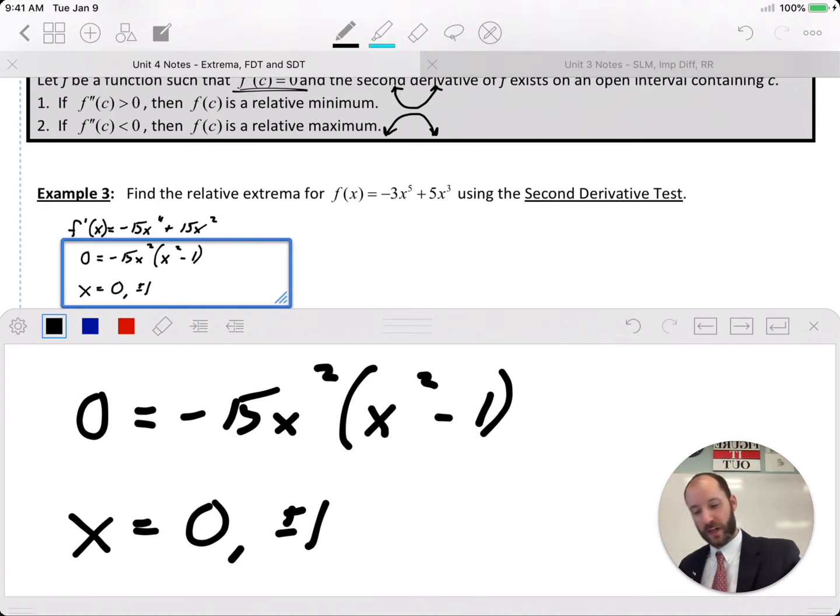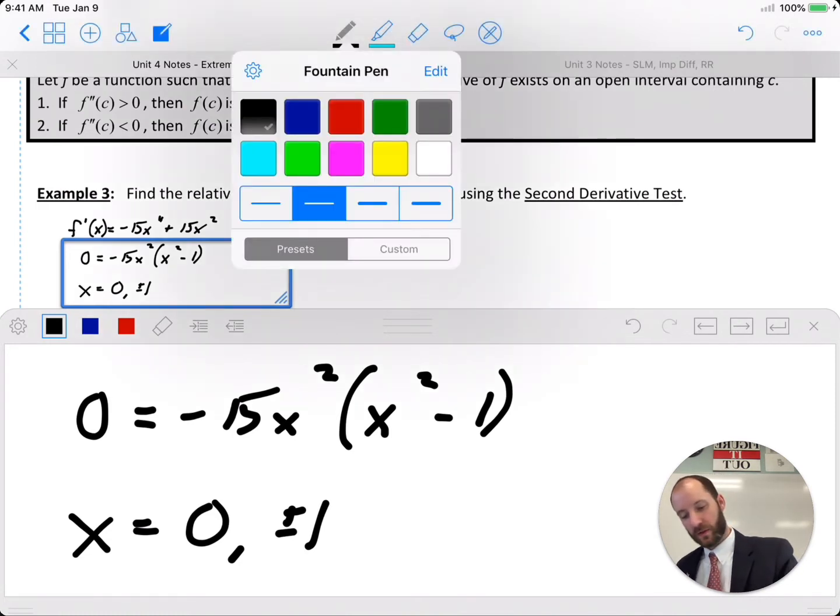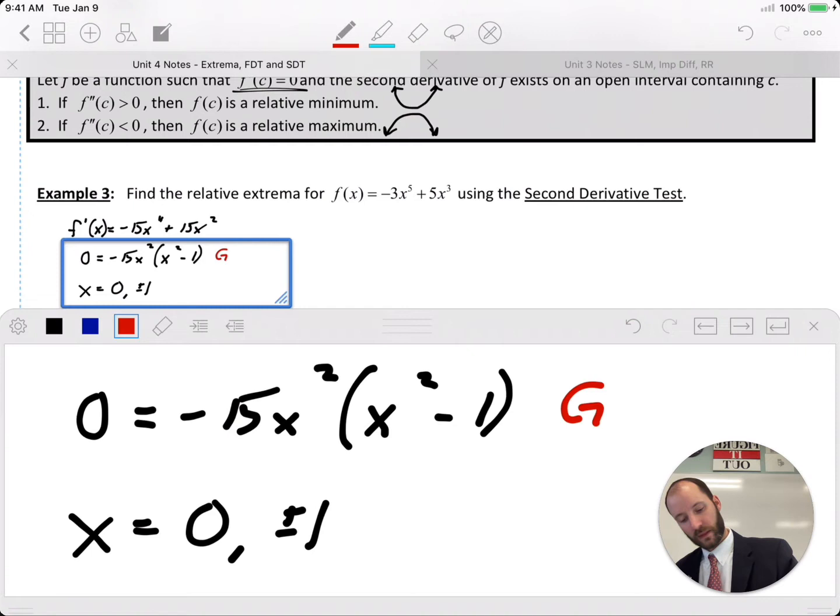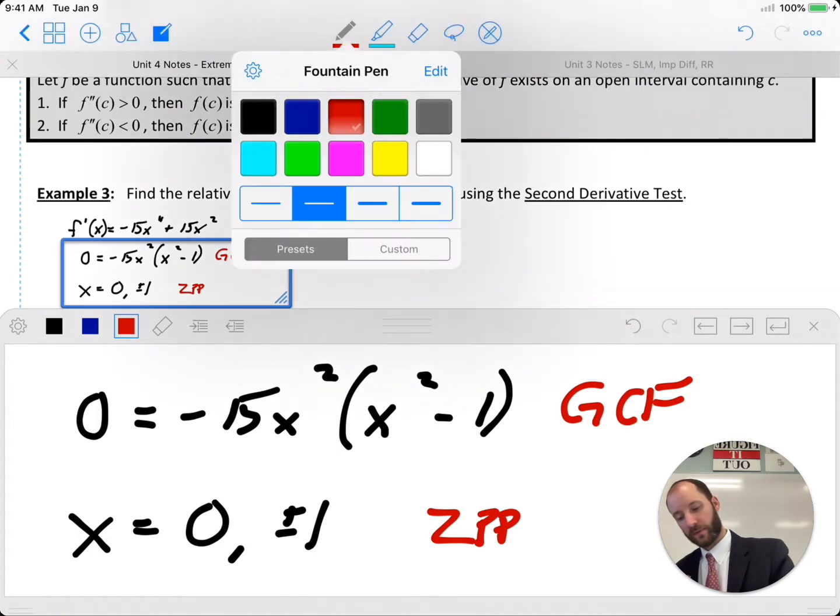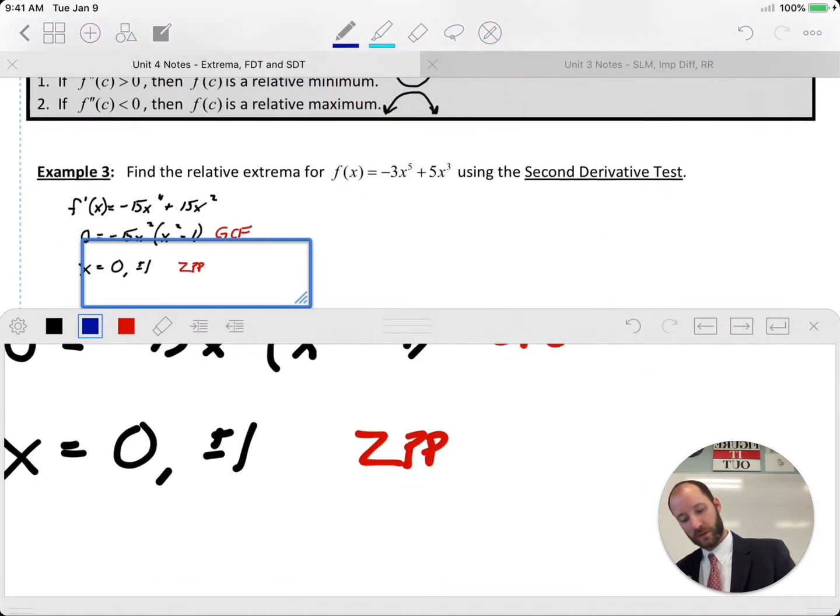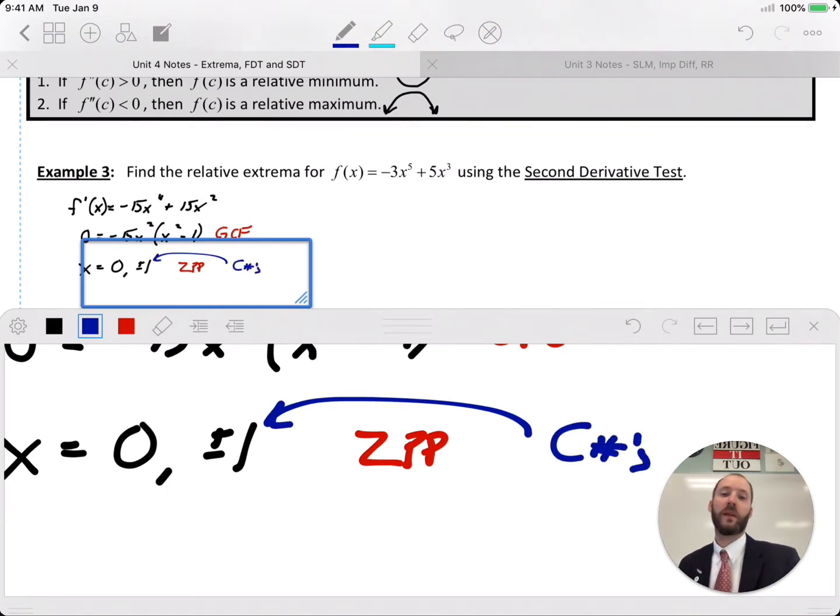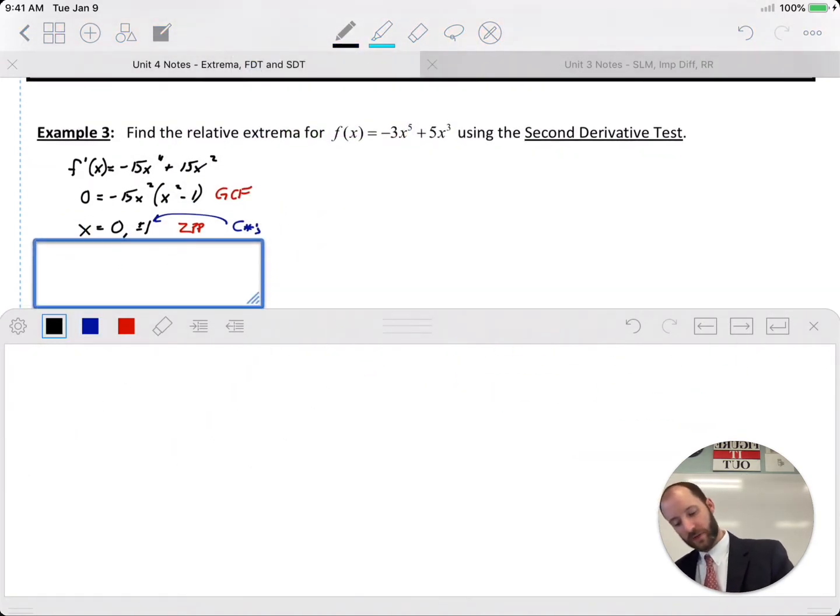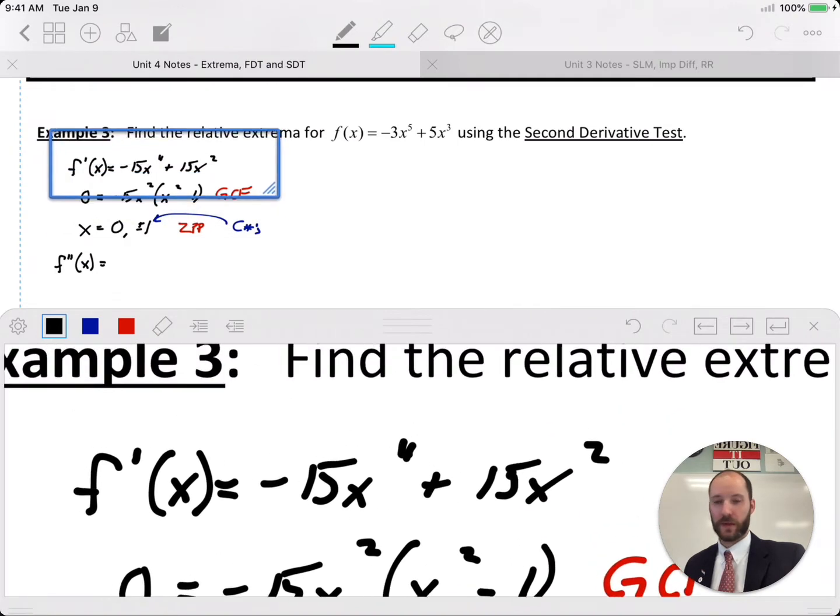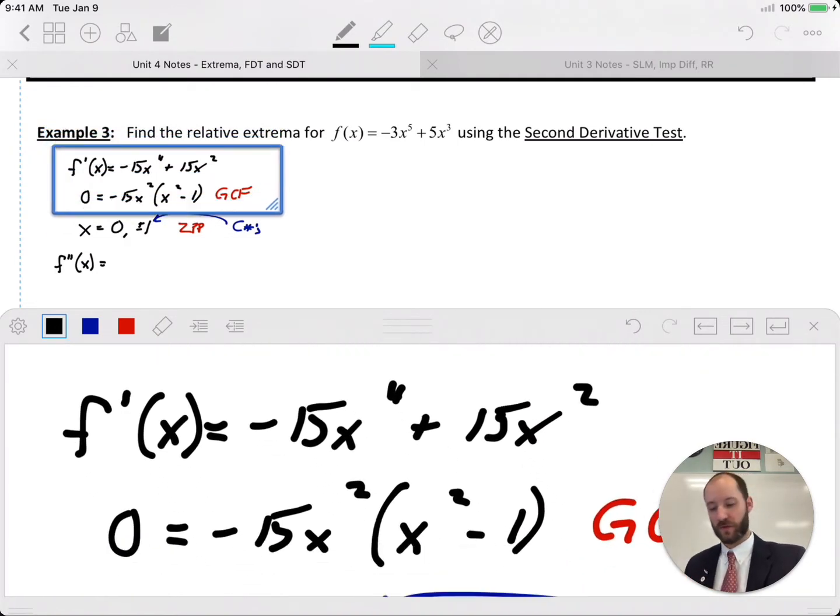So we have x equals zero, positive one, and negative one. Greatest common factor, then zero product property, and we have our critical numbers. So now let's find the second derivative, and I'm going to go back to the first line of our first derivative to use that.